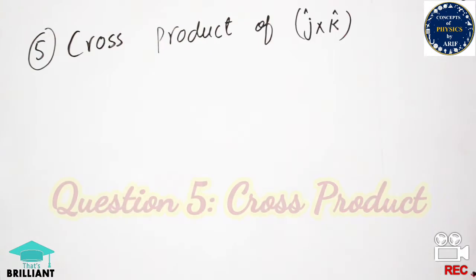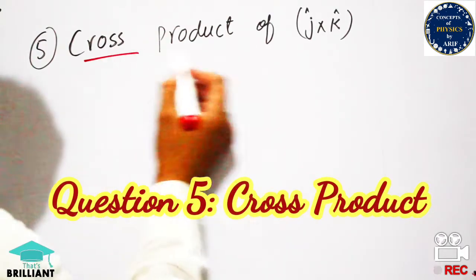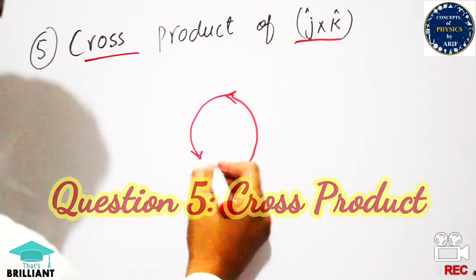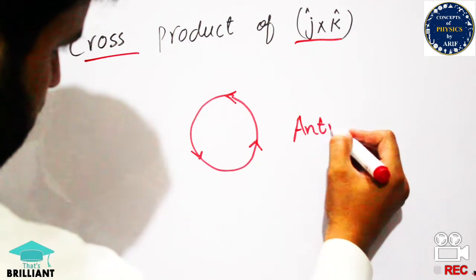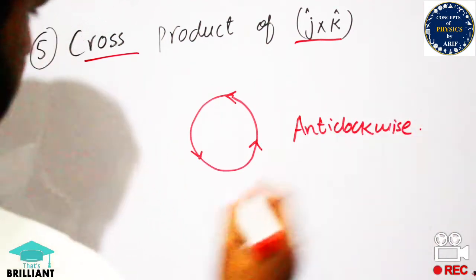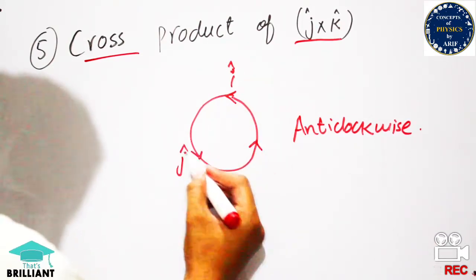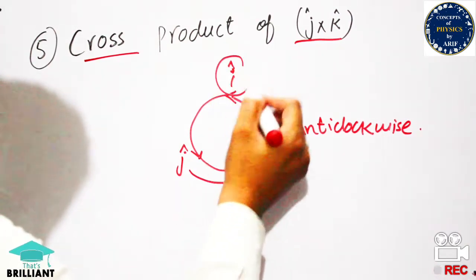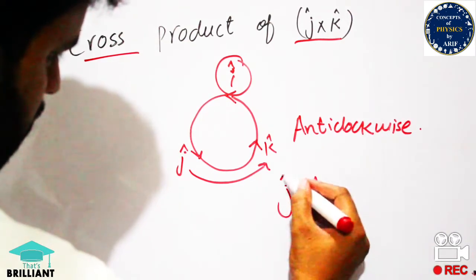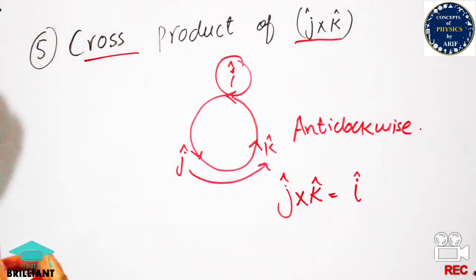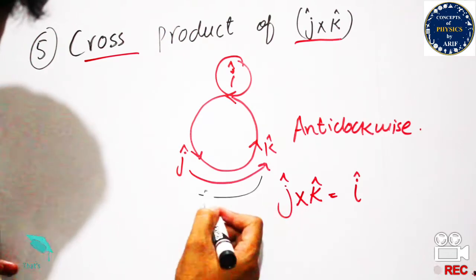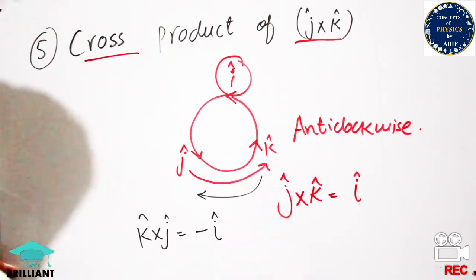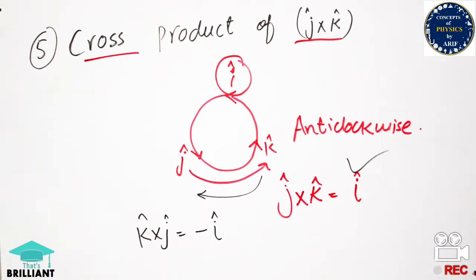The next question asks for the cross product ĵ × k̂. When dealing with cross products, draw a circle in the anti-clockwise direction and place the unit vectors î, ĵ, k̂ accordingly. In the anti-clockwise direction, ĵ × k̂ = î. If going clockwise — the opposite direction, like k̂ × ĵ — the answer gets a negative sign. So the final answer is ĵ × k̂ = î.